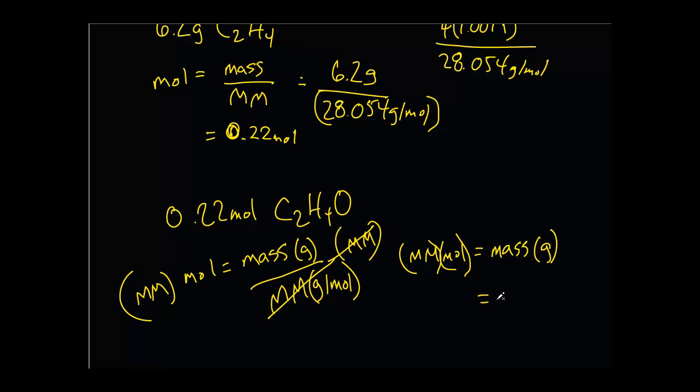So all we need to do is multiply the number of moles we have, which is 0.22, times the molar mass of C2H4O, which we have to find out.